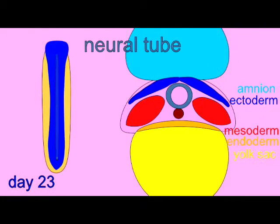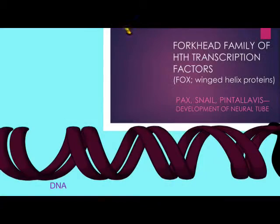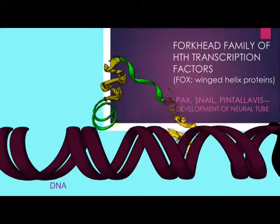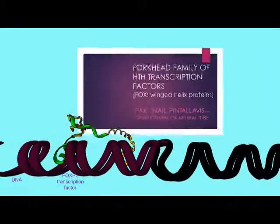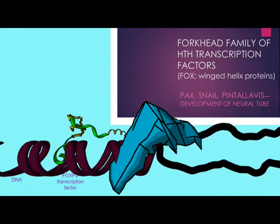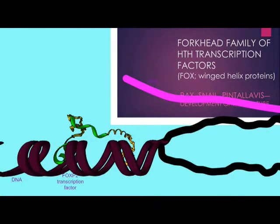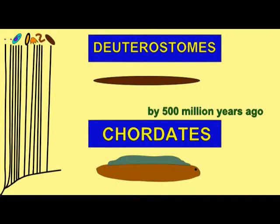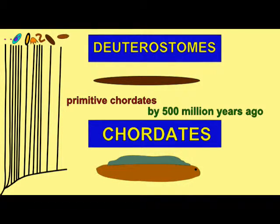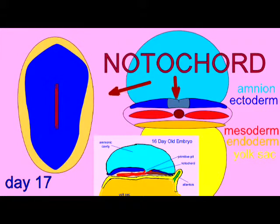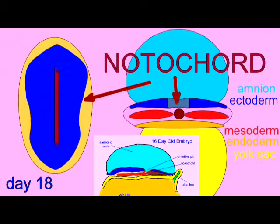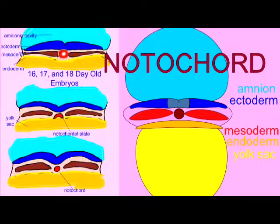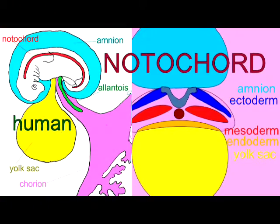In chordates, a number of these genes are shared in the role they have in the differentiation of the neural tube, such as PAX and snail. One of the defining structures in chordates is the notochord, and the Forkhead transcription factor HNF3-beta is required for the development of the notochord.